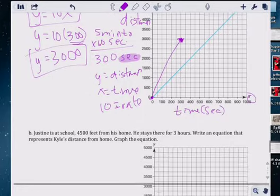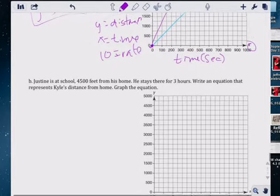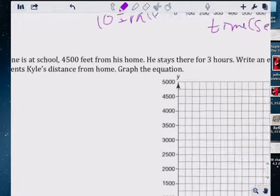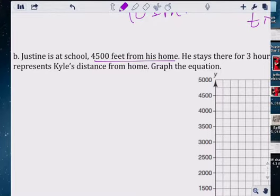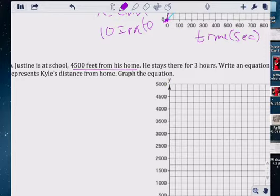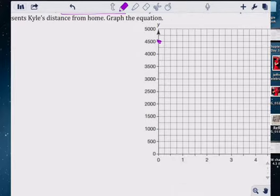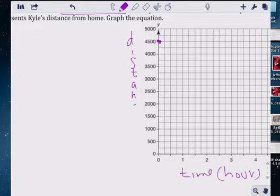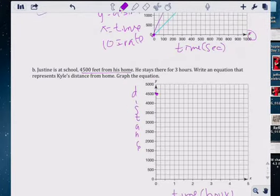But this is the equation. And this is what you need to graph where the school would be. Hope you can draw a little bit straighter. Justin is at school, 450 feet from his house. He stays there for three hours. You're at school at 4500 feet from home. He stays there for three hours. So one, two, three. This is hours. Times and hours. This is distance. Dinner must be ready. Bye. I'm trying to do this before I eat dinner, so it doesn't get out too late. Okay. So for three hours, he stayed at school.